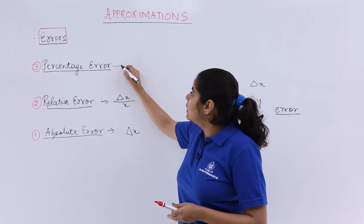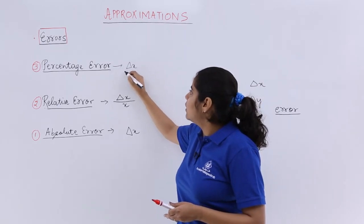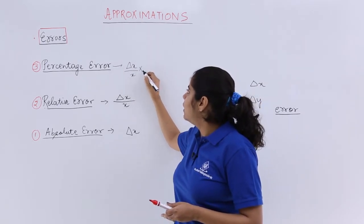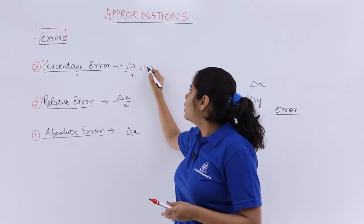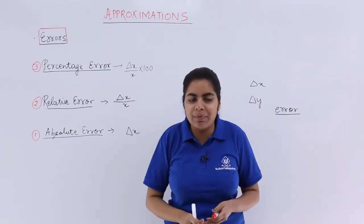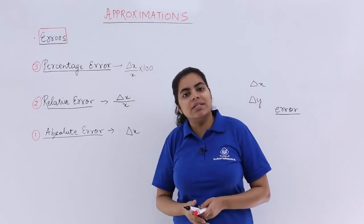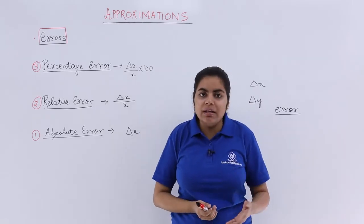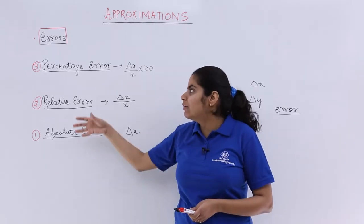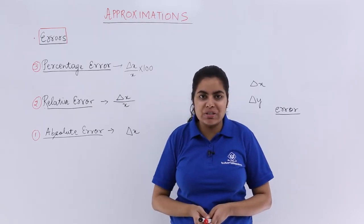Last but not the least is percentage error. So percentage error definitely is what? Relative error multiply by 100 because for percentage we always need to multiply by 100, right? So that is your percentage error. So in this manner you compute what are the different values of errors and you use them for approximations.